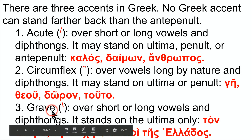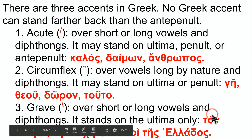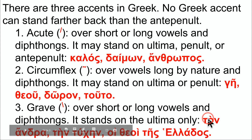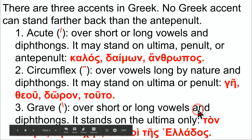A grave occurs over the last vowel only if a word follows. It would normally be an acute, but the grave is like the opposite — you rotate it 90 degrees. So you end up with 'ton,' or also 'tain,' 'theoi,' because these words follow.